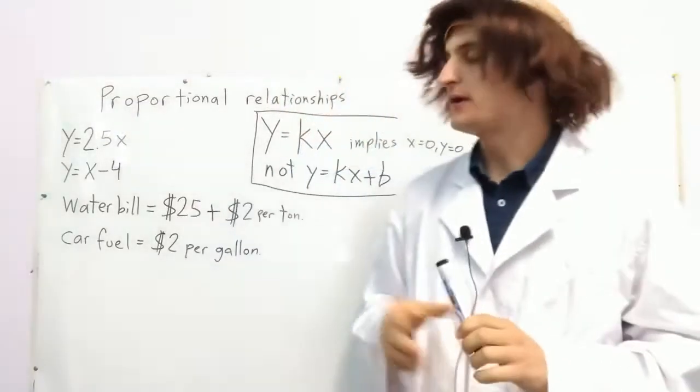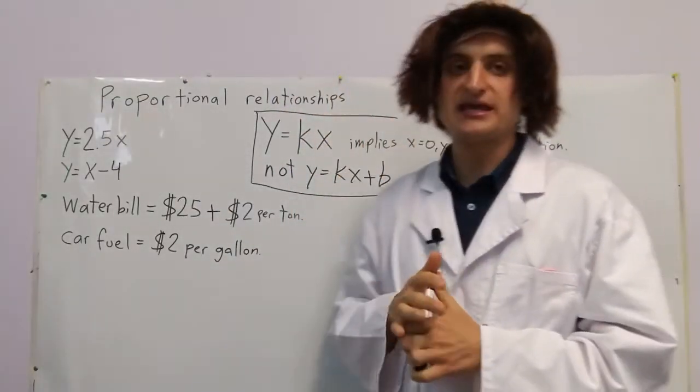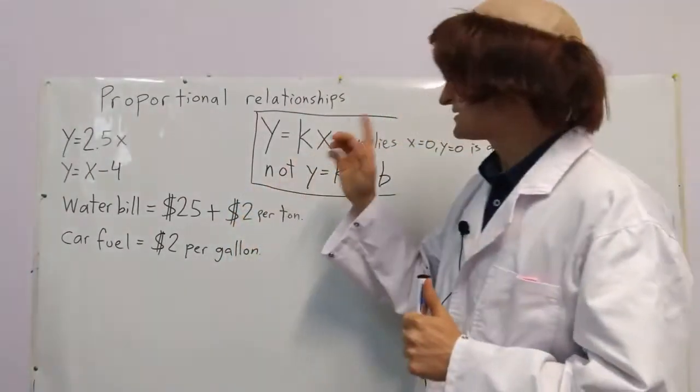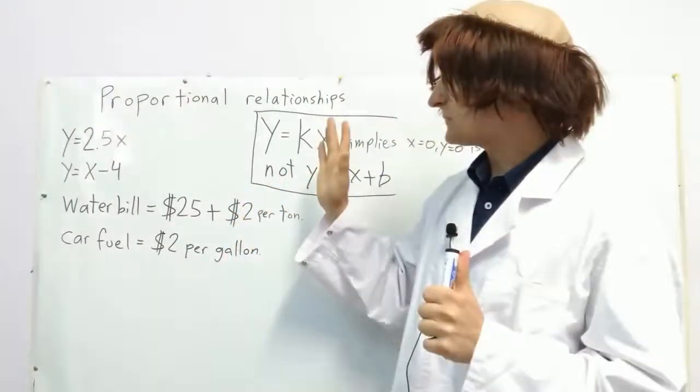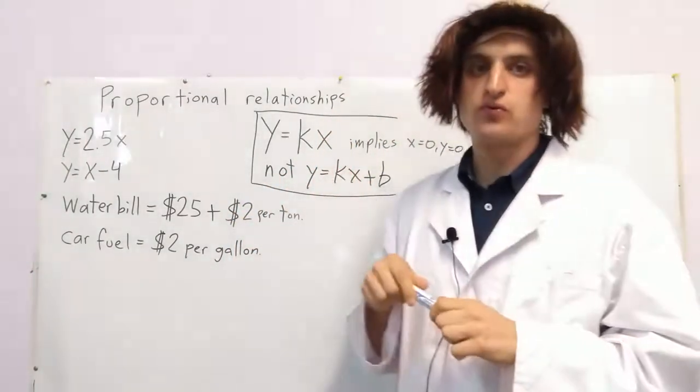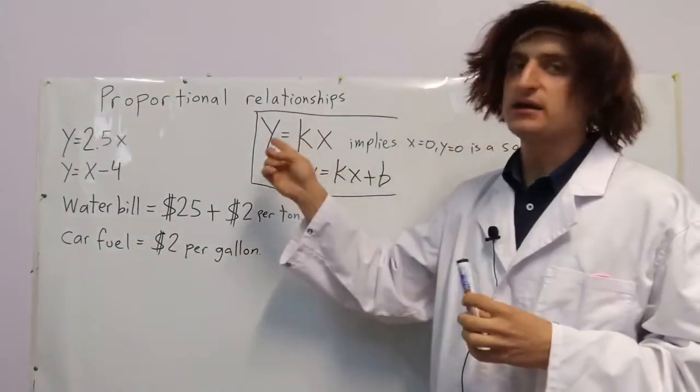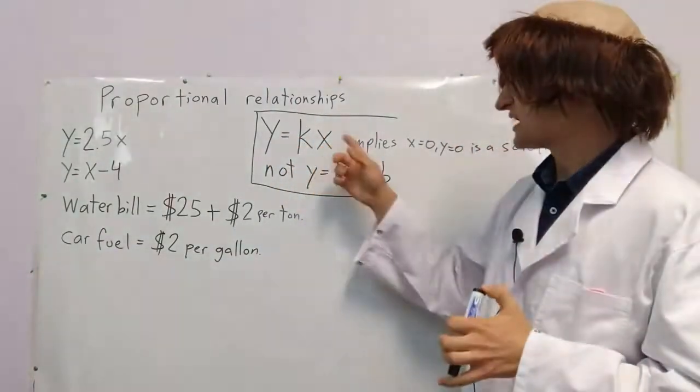Hello! Today, I'm talking about proportional relationships between x and y. A relationship is proportional if you can write it like this: y equals k times x.